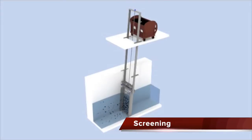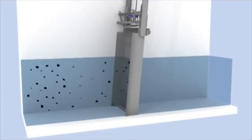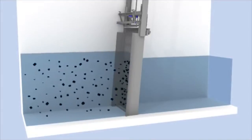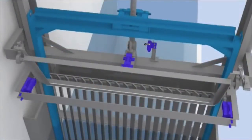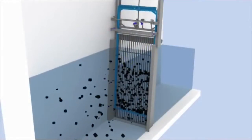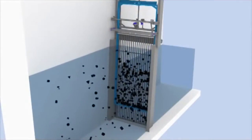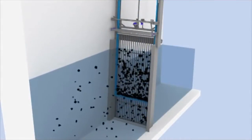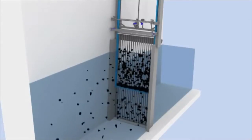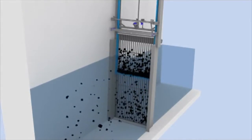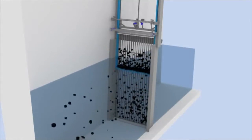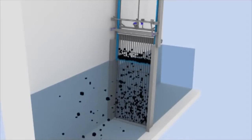Screening is the first and important station for both surface and wastewater. This process is to remove huge and suspended debris from the structure downstream, and to prevent obstruction in the plant. The screen opening size always affects the effectiveness of the screening process — for example, fine screening, medium screening, and coarse screening.